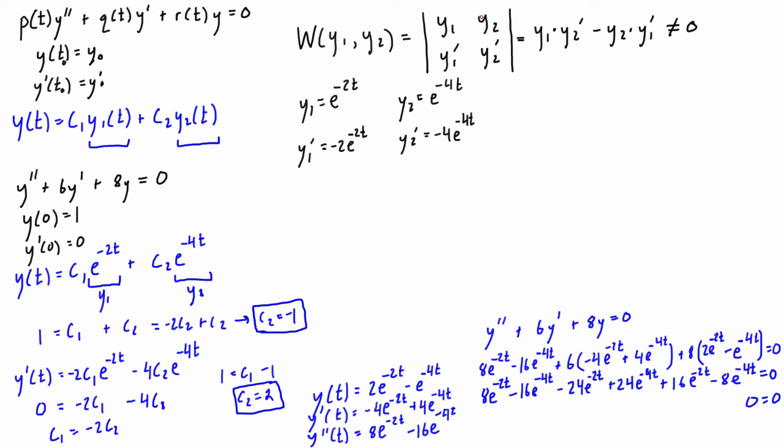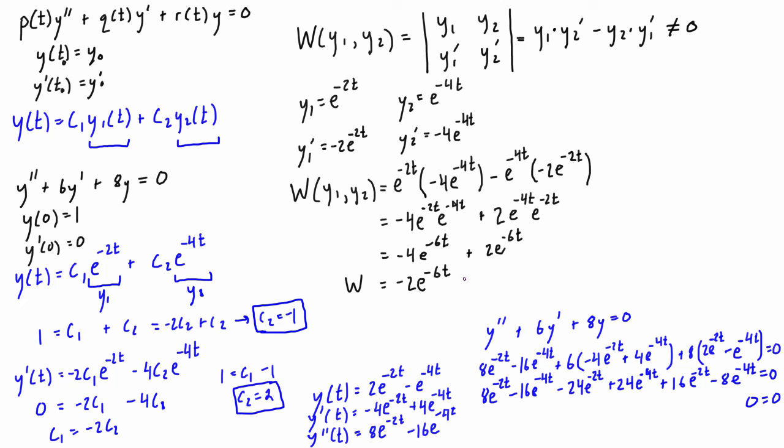If we just take the determinant of them in this matrix form, we have y1 times y2' minus y2 times y1', and that all simplifies down to -2e^(-6t). This will never equal 0 because of the exponential here. There's no value we can plug in that will make this 0. So that tells us that this is satisfied, and y1 and y2, which we had right here and right here, do form a fundamental set of solutions to this differential equation.